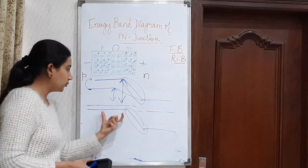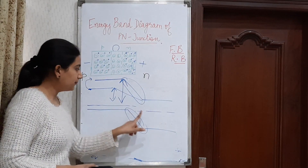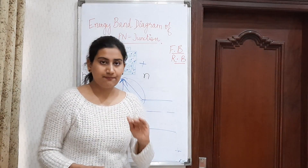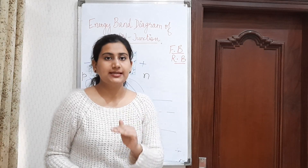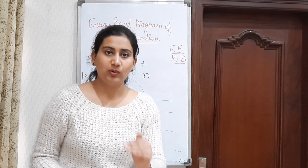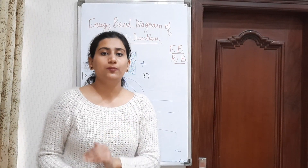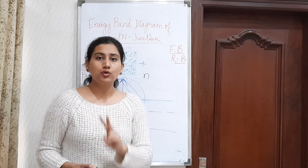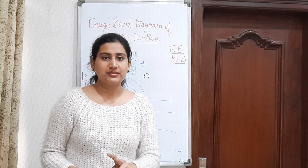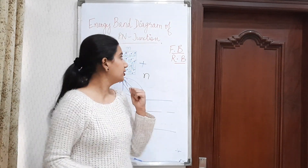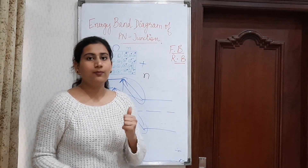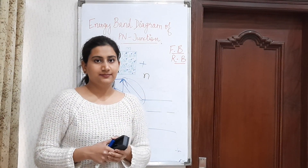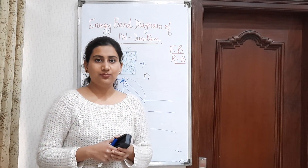Again, when reverse biased, the Fermi levels are not at the same position because there is no equilibrium — there is movement of charges. These were the two basic questions about the energy band diagram of a P-N junction. Thank you.